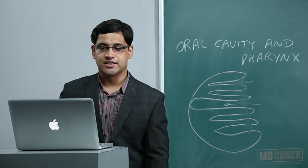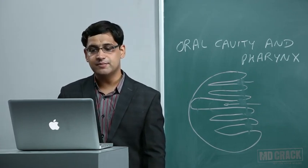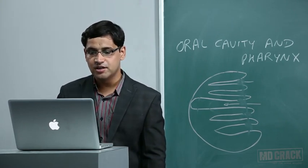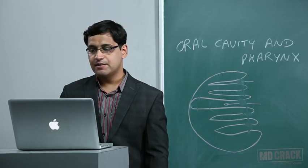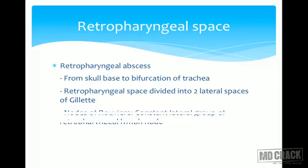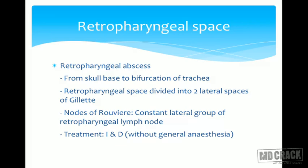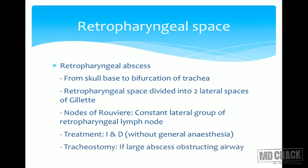The retropharyngeal space extends from the skull base to the bifurcation of the trachea, divided into two lateral spaces known as lateral spaces of Gillette. The nodes of Rouvière are constant lateral retropharyngeal lymph nodes. Treatment is incision and drainage without general anesthesia, as putting the patient under anesthesia risks fatal aspiration of pus. Prophylactic tracheostomy is done if the airway is obstructed.